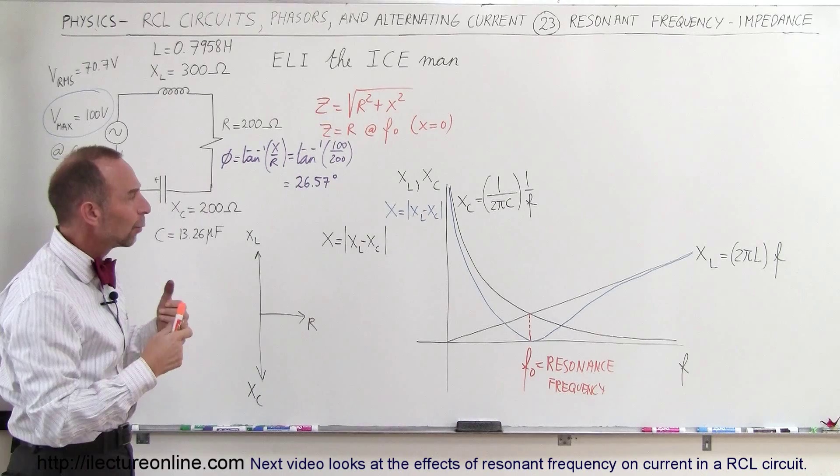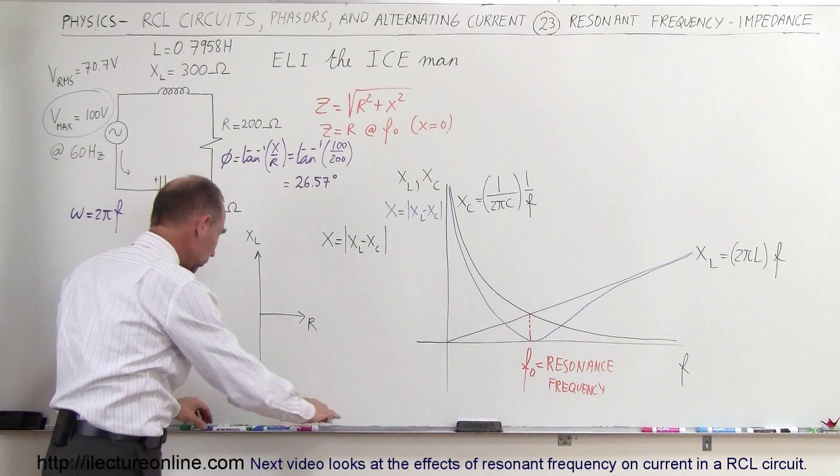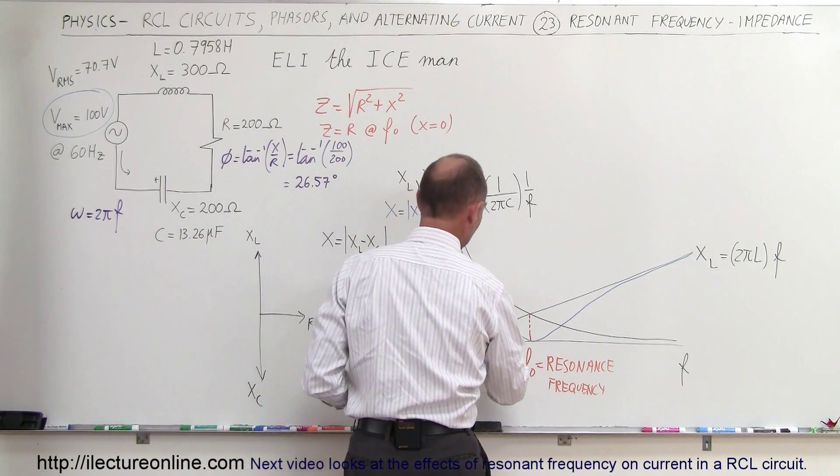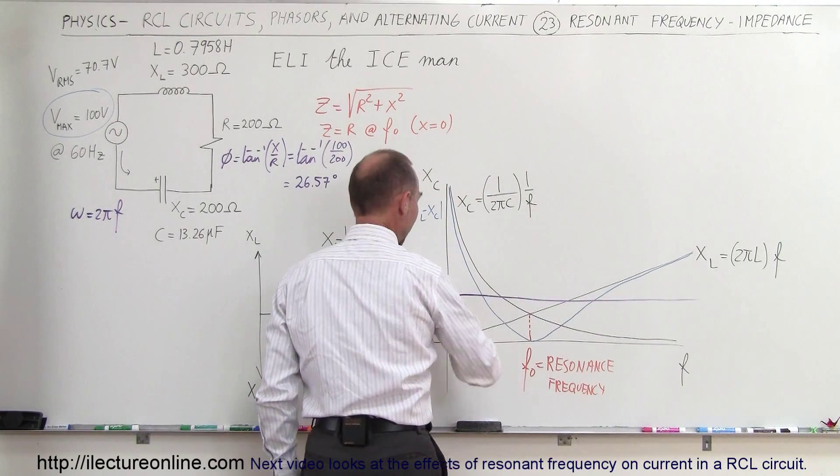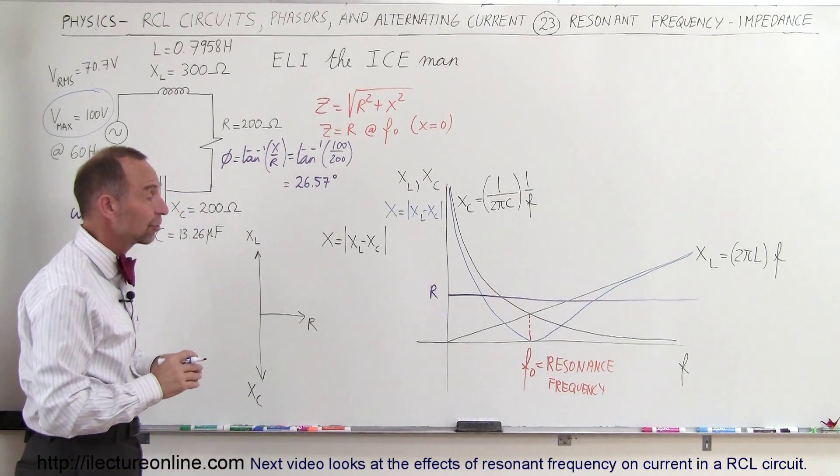So what does that look like? What does the total impedance look like as a function of the frequency? Well what we're going to do here is we're going to add the resistance to the circuit. So let's say that we have a resistor in the circuit that has this amount of resistance right here and so that would be r, and r of course is going to be constant. r is not affected by the frequency of the circuit.